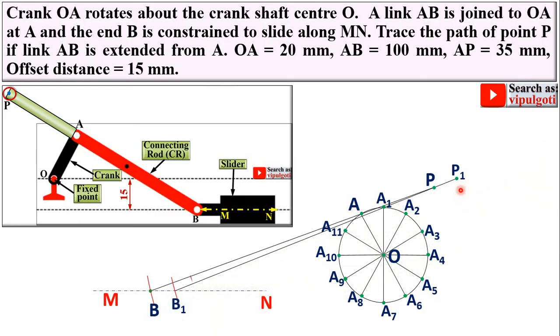Similarly, you can do it. First draw the arc with center A2 and radius equal to 100 mm, and you will get B2 point over here. Join B2 A2 and extend it. So you will get P2 point.